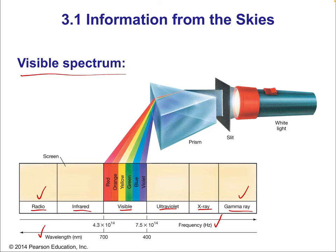Radio waves have low frequency and are very long — they can be many meters long. On the other hand, gamma rays are very high frequency and very short — shorter than the size of an atomic nucleus, and their frequency is unbelievably high. Quite a range.